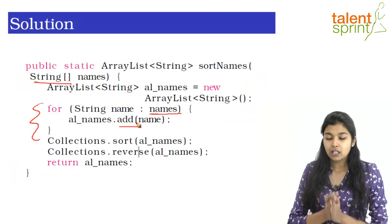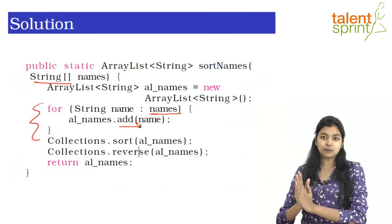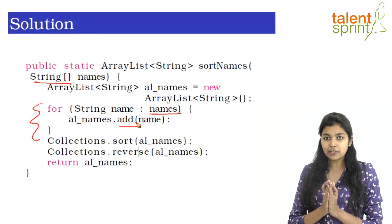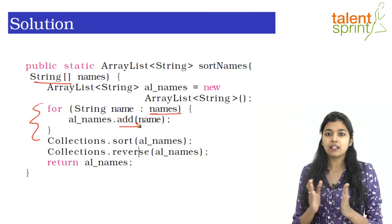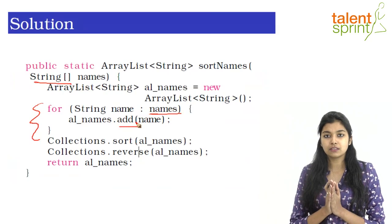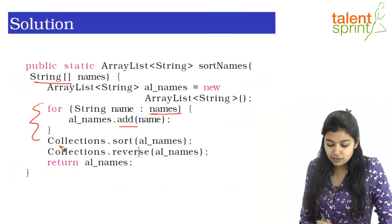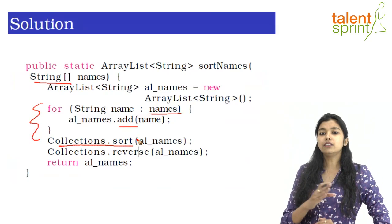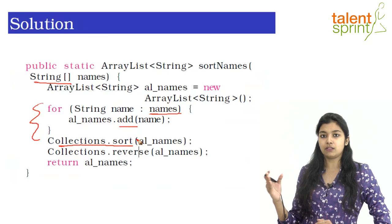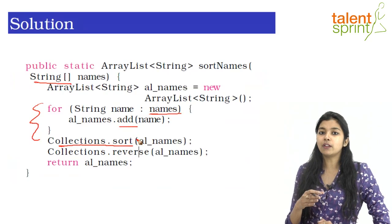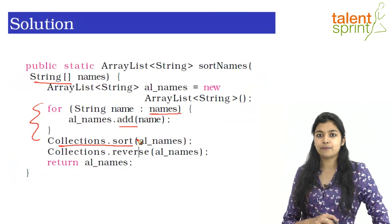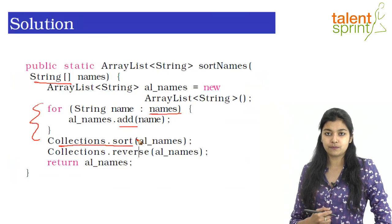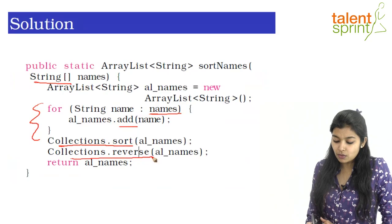Now that all the names are present in the ArrayList, to sort it we simply use the function Collections.sort. This will sort your ArrayList and order it in ascending order. But since we want the output in descending order, we use another pre-existing function — Collections.reverse.